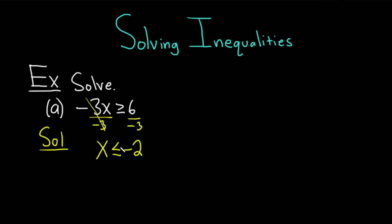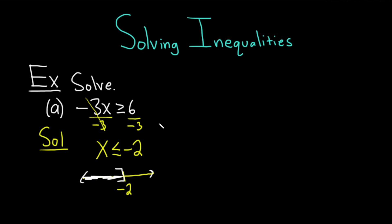So the solution set for this inequality is the set of all x such that x is less than or equal to negative 2. You could write that out in words, or you can express your answer in interval notation. Here's negative 2, and it's all the numbers less than or equal to negative 2, so we include the negative 2 and use a bracket. If it was a strict less than, you would use a parentheses instead. From this picture, the interval is negative infinity to negative 2 — parentheses, negative infinity, negative 2. You always use parentheses for infinity and negative infinity.